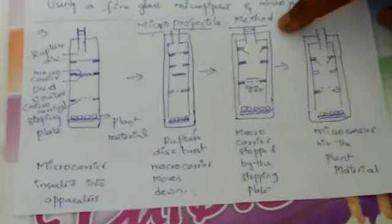This was discovered by Sanford. Alternative names for this microprojectile method include particle gun, gene gun, and bioblaster.